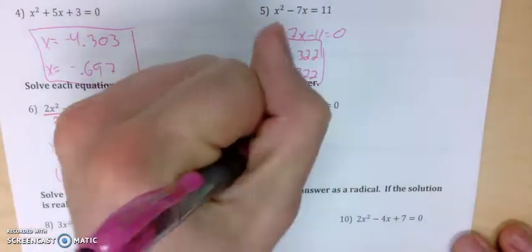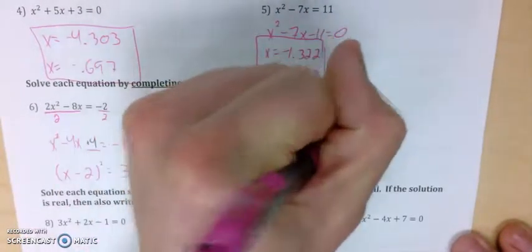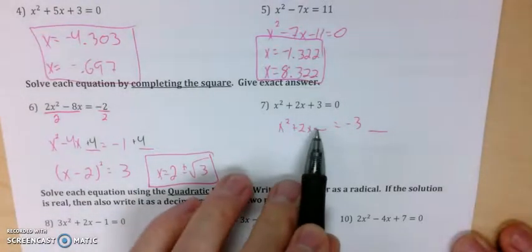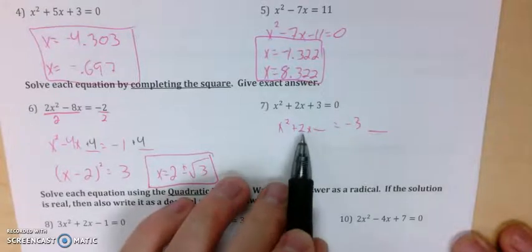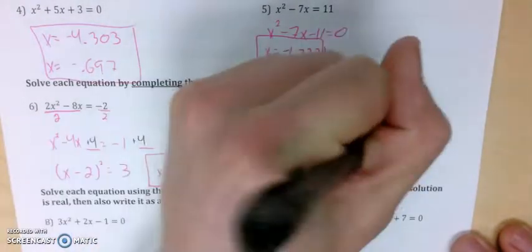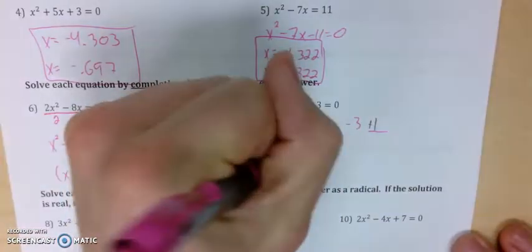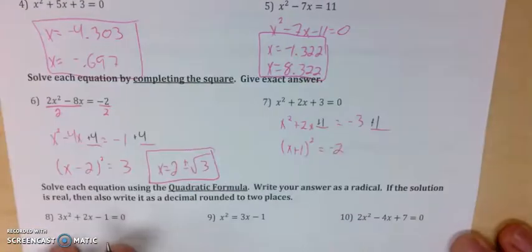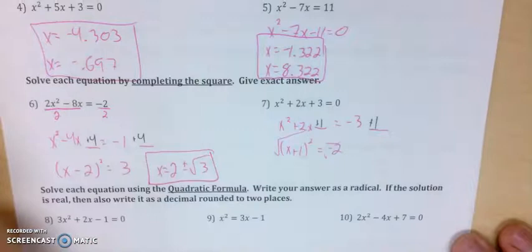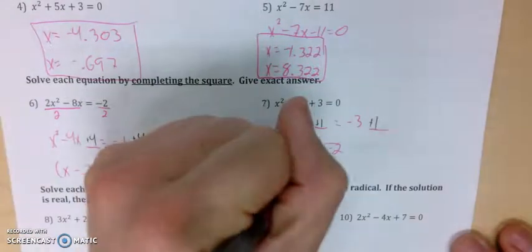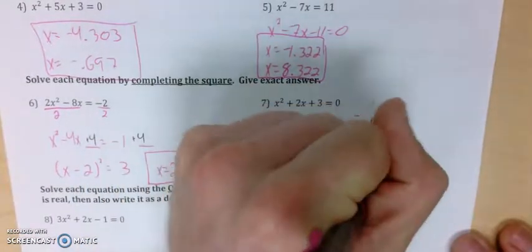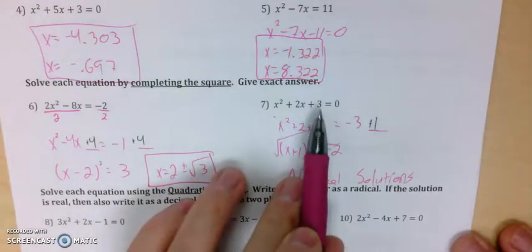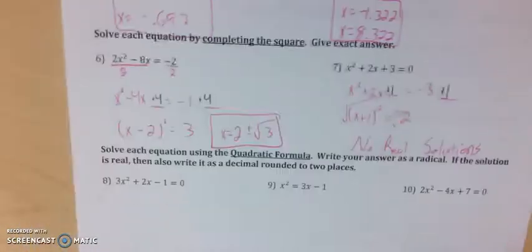On number 7, we move the 3 over so we have x squared plus 2x, blank space, equals negative 3 followed by a blank space. To get a perfect square trinomial, I take half of 2 and square it — that gives me 1. So I have x plus 1 quantity squared equals negative 2. If I try taking the square root of each side, I get an imaginary solution — so there are no real solutions. That means if I graphed this parabola, it would never hit the x-axis — zero x-intercepts.